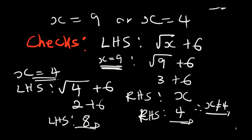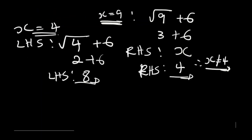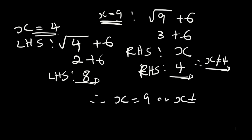In conclusion, x = 9 is the valid solution, and x ≠ 4 (it is an extraneous solution). It's important to always check your equations — otherwise you won't get full marks.